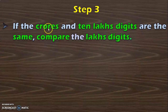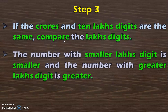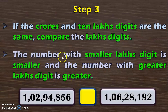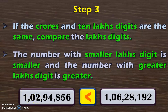Next, suppose the two numbers have the crore's and the 10 lakhs digit the same. Then move on to the next lower place value which is the lakhs digit. The number with smaller lakhs digit is smaller and the number with greater lakhs digit is greater. Here you have the crore's place value to be the same, 10 lakhs place value to be the same. So next compare the lakhs place value where you have 2 and 6. We know that 2 is lesser than 6. You can always start your comparison from the extreme left, the largest place value. So since 2 is lesser than 6, you conclude 1 crore 2,94,826 is lesser than 1 crore 6,28,192.